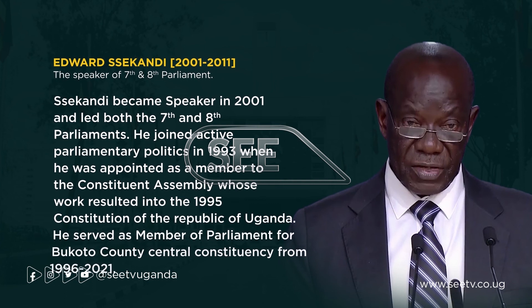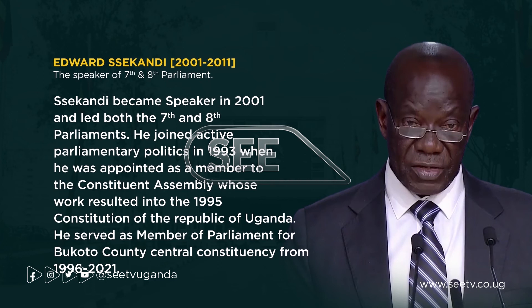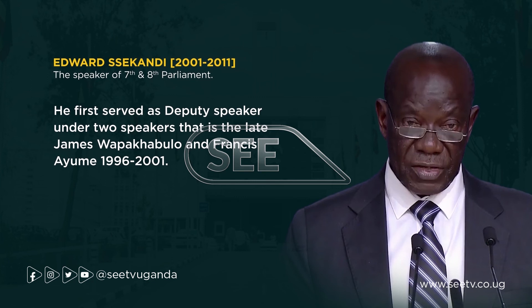Edward Sekandi served from 2001 to 2011. Sekandi became Speaker in 2001 and led both the Seventh and Eighth Parliament. He joined active parliamentary politics in 1993 when he was appointed as a member to the Constituent Assembly, whose work resulted in the 1995 Constitution of the Republic of Uganda. He served as Member of Parliament for Bukoto County Central Constituency from 1996 to 2021, and first served as Deputy Speaker under both the late James Wapakaburo and Francis Ayume from 1996 to 2001.